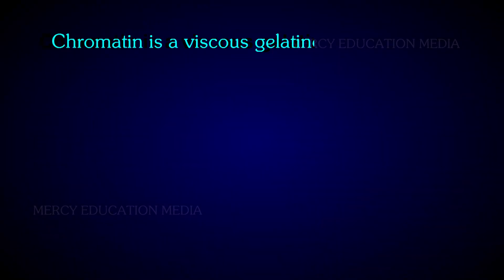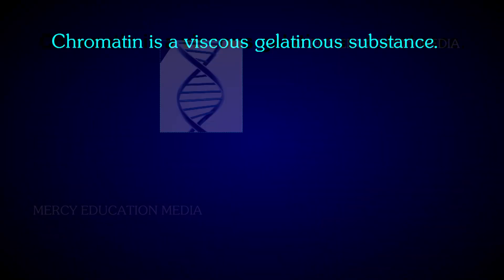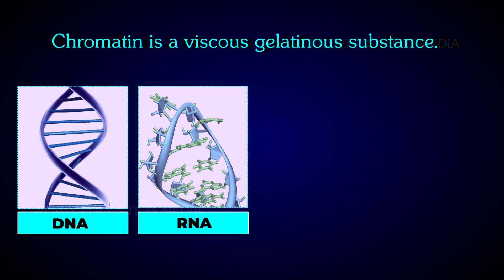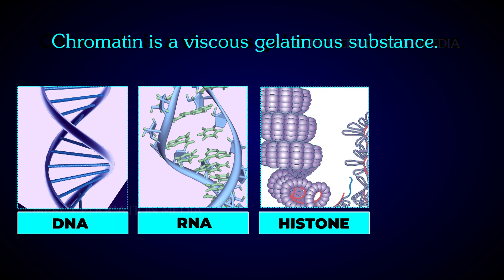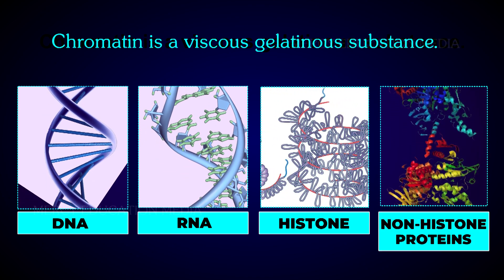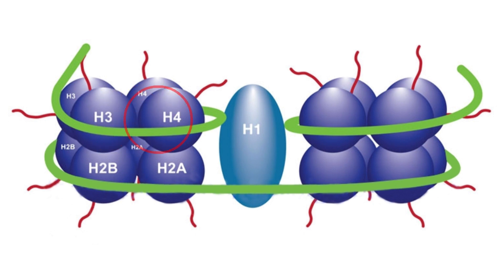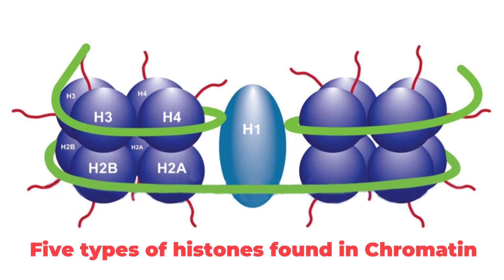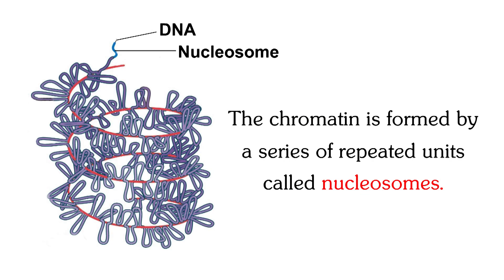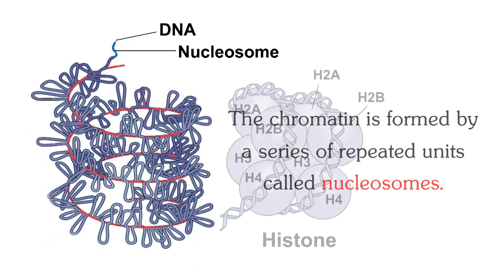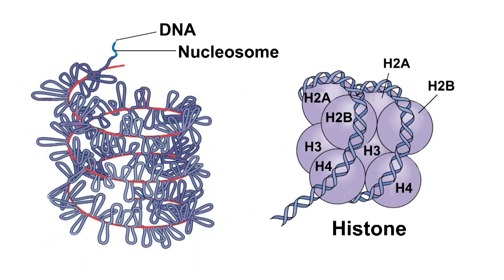Define chromatin. Chromatin is a viscous gelatinous substance that contains DNA, RNA, histone and non-histone proteins. The histones are classified into H1, H2A, H2B, H3, and H4 — these are the 5 types of histones found in the chromatin. The chromatin is formed by a series of repeated units called nucleosomes. Each nucleosome has a core of 8 histone subunits.